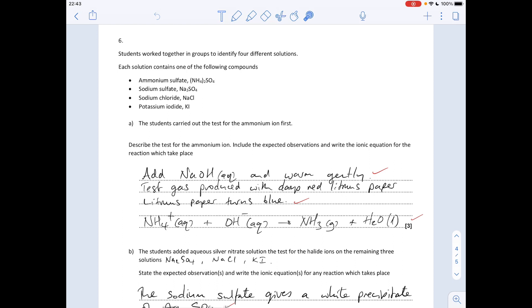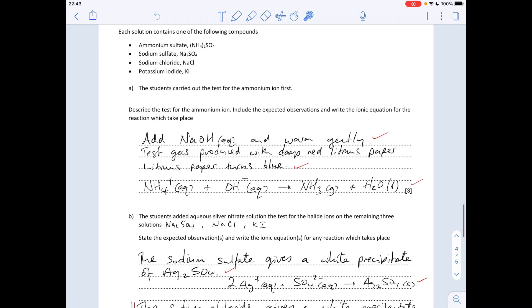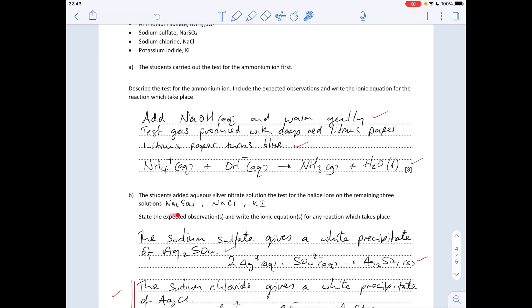Part b: the student added aqueous silver nitrate solution to test for the halide ions on the remaining three solutions. The remaining three solutions are the sodium sulfate, the sodium chloride, and the potassium iodide. State the expected observations and write ionic equations for any reactions that take place. Because we've got a sulfate present now, that will give a false positive when it reacts with silver nitrate solution. So the sodium sulfate will give a white precipitate of silver sulfate and there's the ionic equation for that.